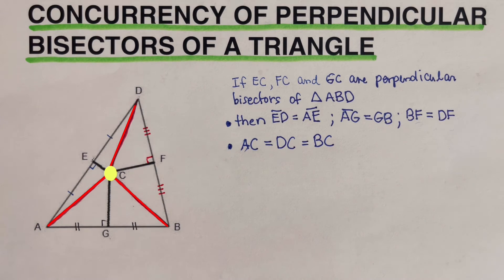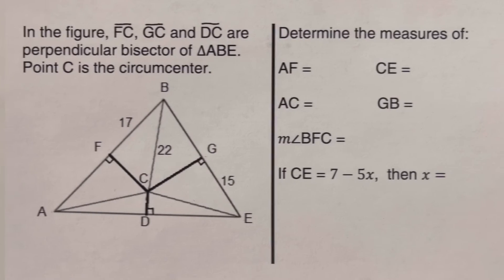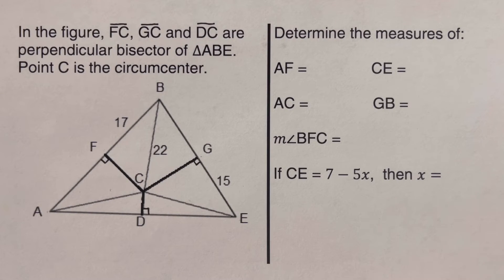Now let's take some more examples. Now let's go over this problem right here. So in the figure FC, GC, and DC are perpendicular bisectors of triangle ABE. Point C is the circumcenter.